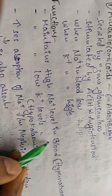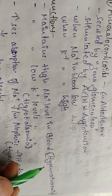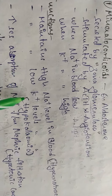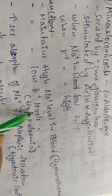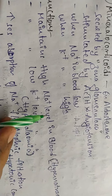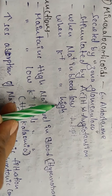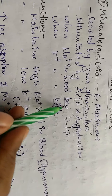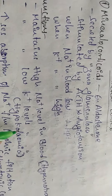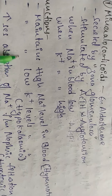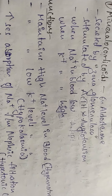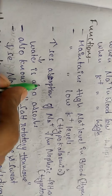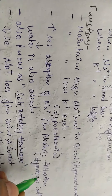The functions of mineralocorticoids include maintaining high sodium levels in blood — a condition called hypernatremia. They also maintain low potassium levels in blood — a condition called hypokalemia. These hormones are released to restore balance when sodium decreases or potassium increases.